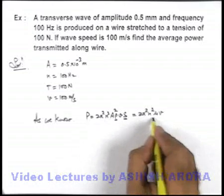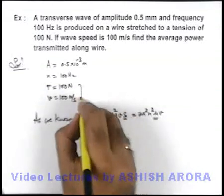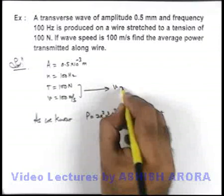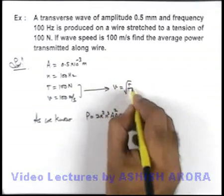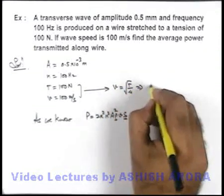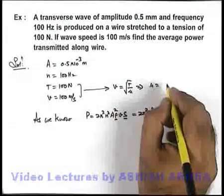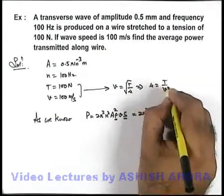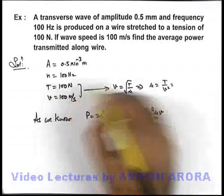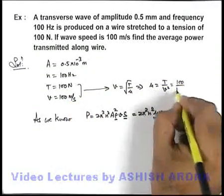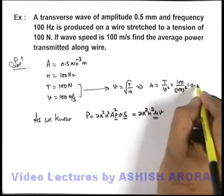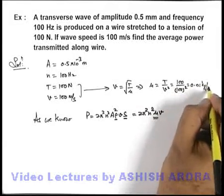If we wish to find out the linear mass density, we can obtain it from these relations. We know wave speed is √(T/μ), which gives linear mass density equal to T/v². If we substitute the values of T and v, it is 100/100² = 0.01 kg/m.